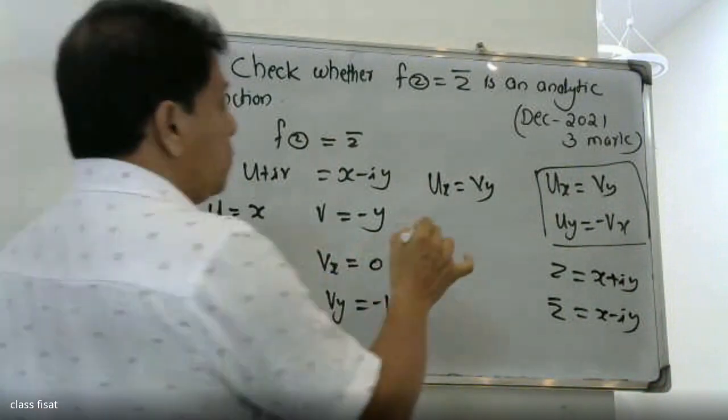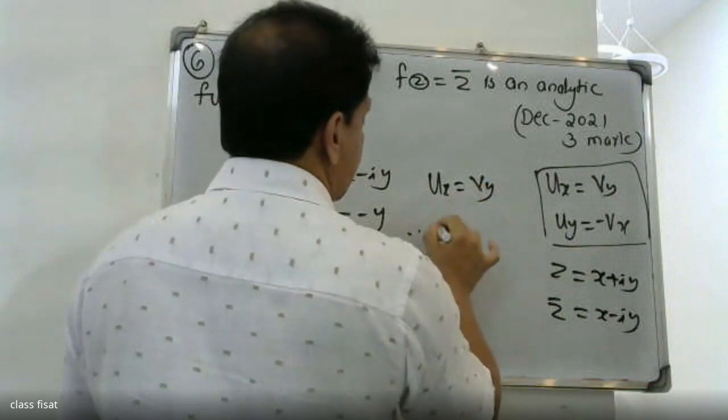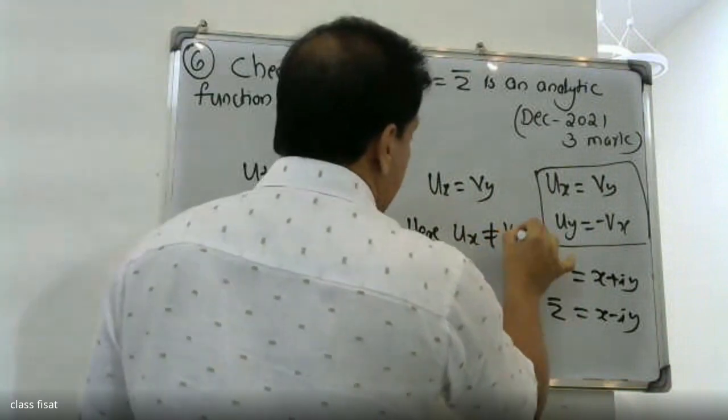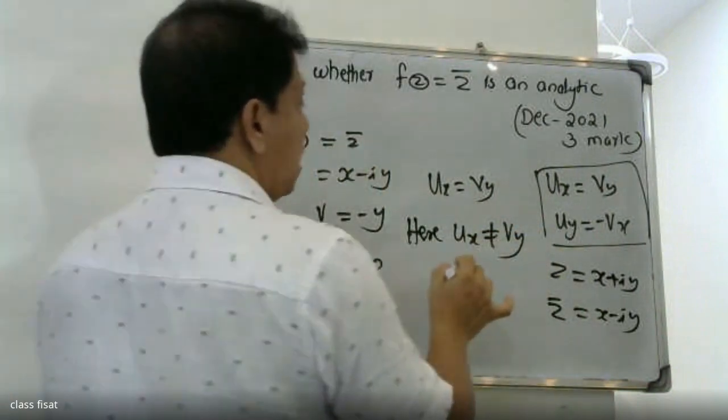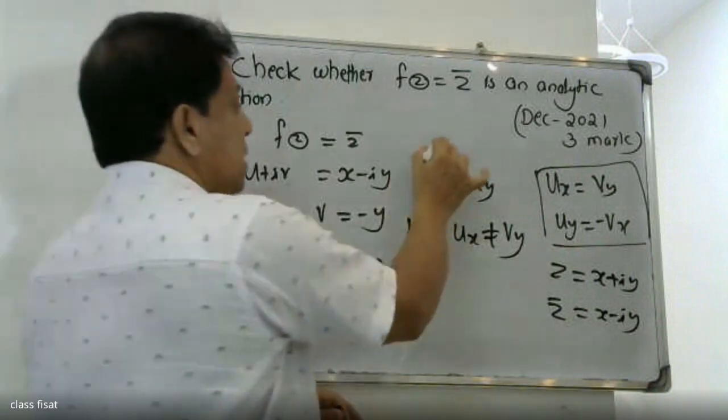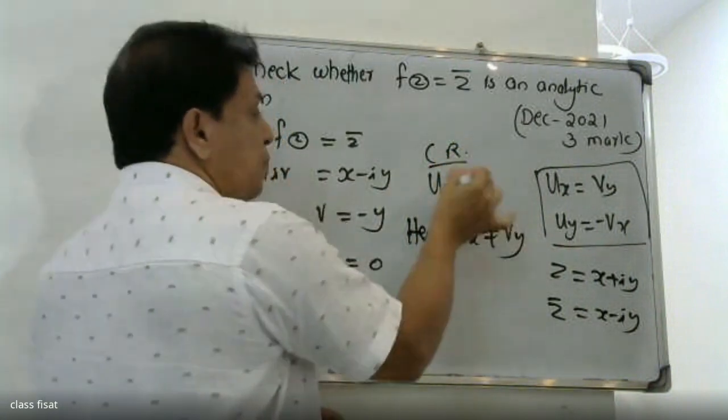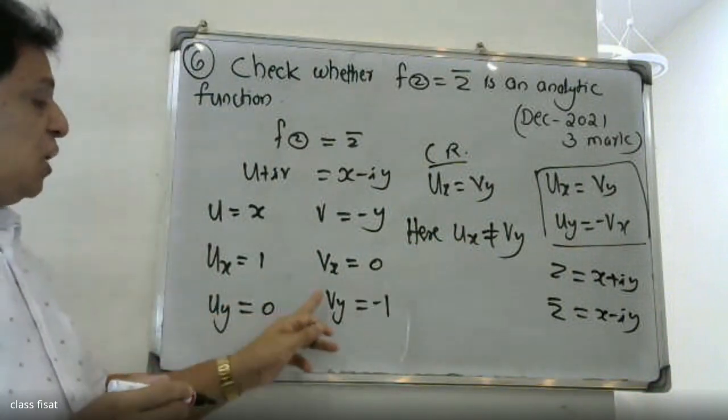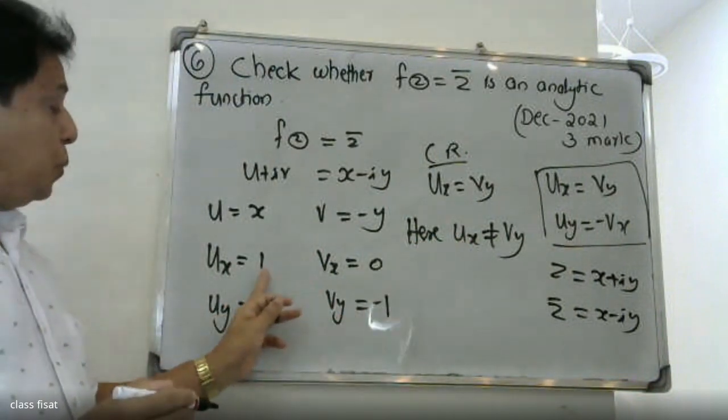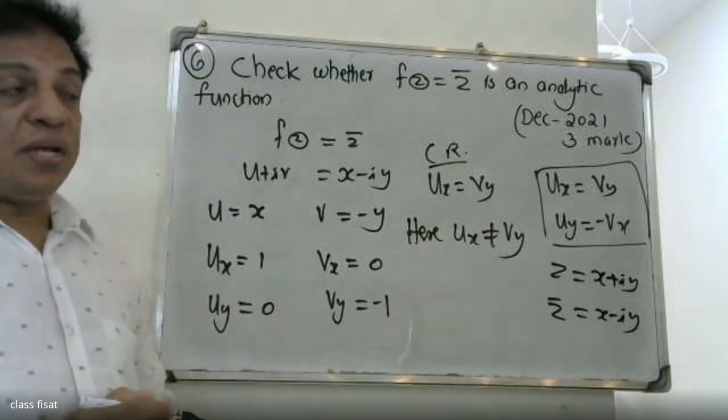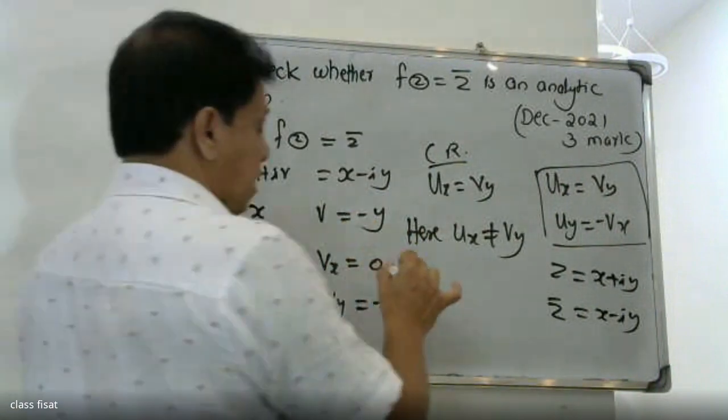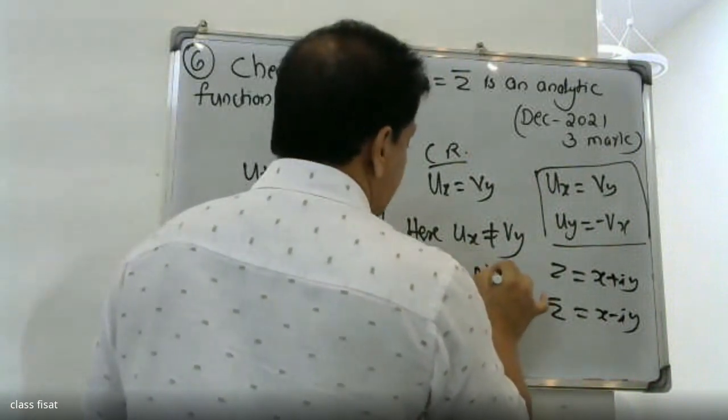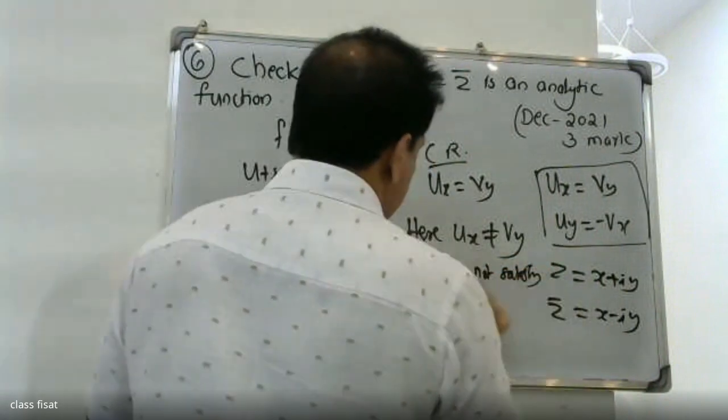Therefore, ux is not equal to vy. Here ux equals 1 but vy equals minus 1, so ux is not equal to vy. Therefore, ux is not equal to vy.